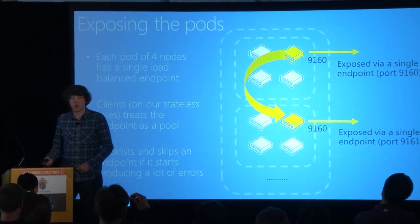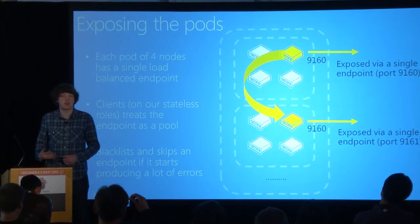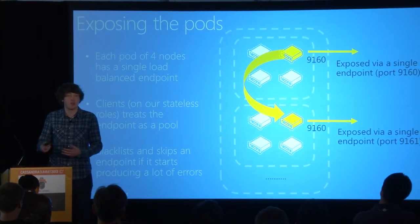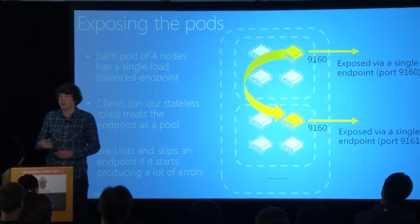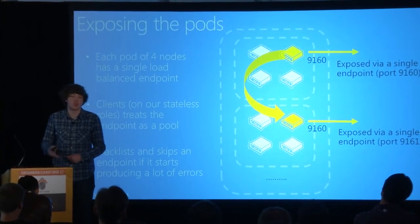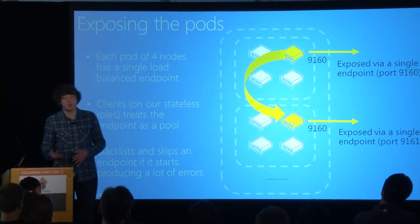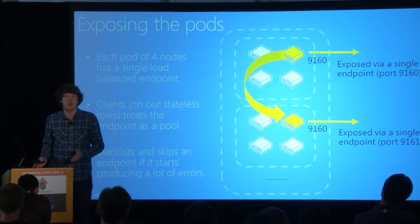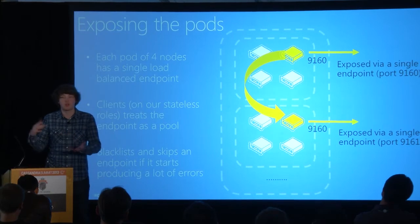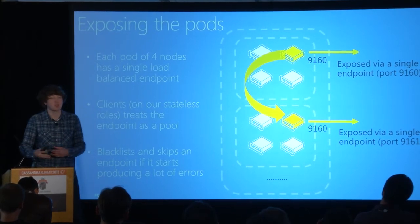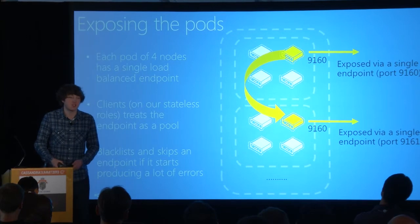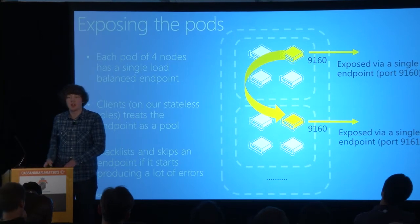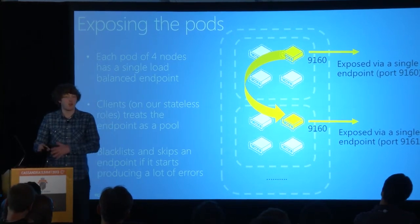Each pod is exposed outside to the rest of our components via an endpoint — one endpoint per pod, all sitting behind a single FQDN by different ports. These endpoints load balance between the four machines in each pod. Each pod is exposed as a separate endpoint to our clients, and our clients go round robin between these different endpoints and can blacklist, whitelist, demote, or add different weight to each endpoint based on performance seen in real time. If a particular set of machines is performing poorly, it'll get blacklisted and our clients will no longer query that machine.